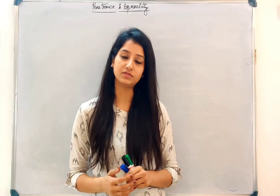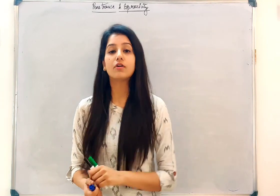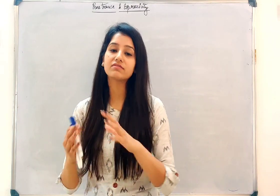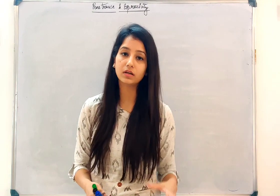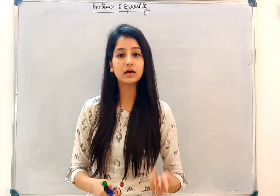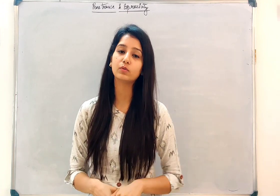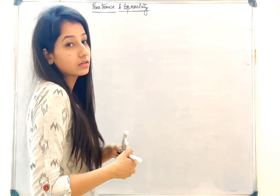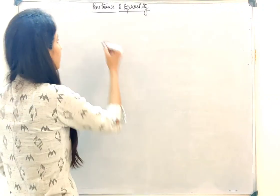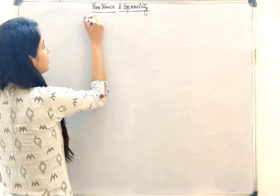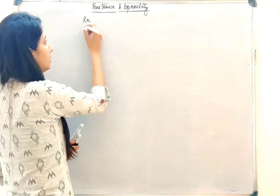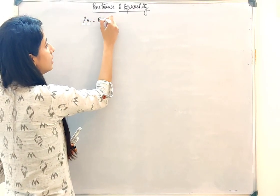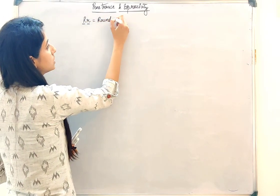What is penetrance and what is expressivity? Earlier, what we have studied is that if there is a dominant allele, then it will express itself and it will show the characteristic. For example, if we take the example of a pea plant, if we say that capital R and small r is the genotype, then always the seed will be a round seed.